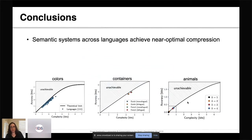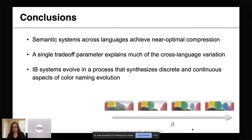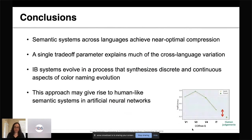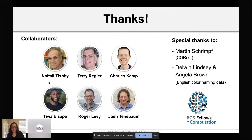To conclude: semantic systems across languages achieve near-optimal compression. We've focused on colors and containers, but we also have evidence from other semantic domains. A single trade-off parameter beta explains much of the cross-language variation in the data. The optimal systems evolve in an annealing-like process that synthesizes both discrete and continuous aspects of color naming evolution. This approach may also give rise to human-like semantic systems in artificial neural networks, though we're still working to close this gap. Finally, we've very recently applied this approach to human pragmatic systems as well, moving beyond semantic systems — a manuscript is available on arXiv.